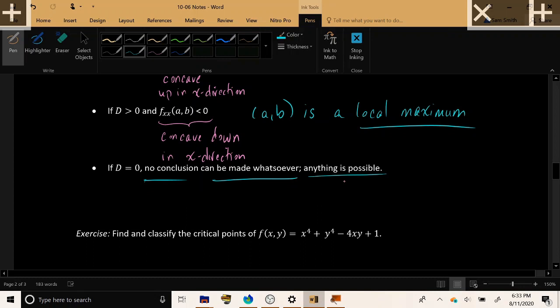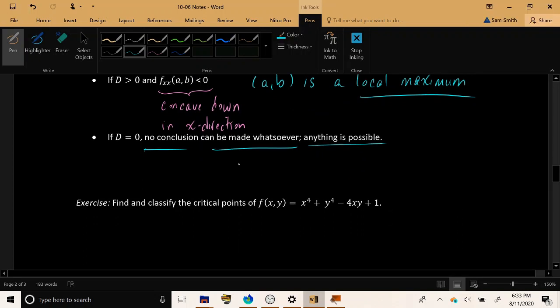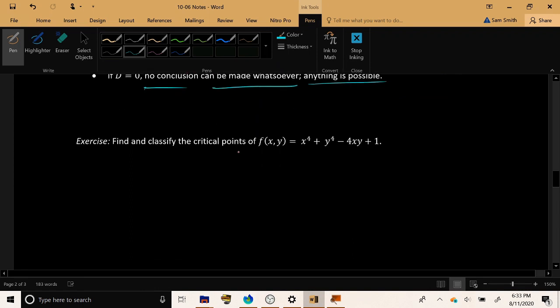Anything is possible. You could have a saddle point. You could have a local min. You could have a local max. There's no way of knowing at this point. You would have to either look at the graph or maybe look at the contour map of the function. You would need some other way to classify the point because the second derivative test is inconclusive, and it will not tell you anything.